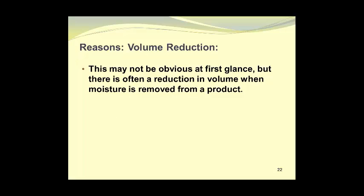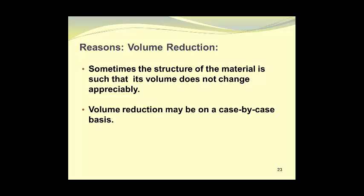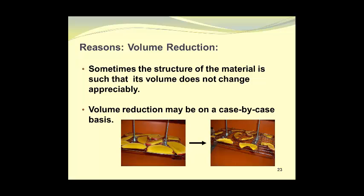Volume reduction may not be obvious at first glance, but there is often a reduction in volume when moisture is removed from a product. We start with a larger volume, and during the course of the drying process, the material shrinks down to a smaller volume. Sometimes the structure of the material is such that its volume does not change appreciably, so volume reduction may be viewed on a case-by-case basis. Here we see some mango slices in a dryer before the drying process has begun, and with time, when the final product is ready to be removed, you can see just how much the size of each one of these mango slices has changed by viewing the amount of space between the slices. So we definitely have a volume reduction in this case.